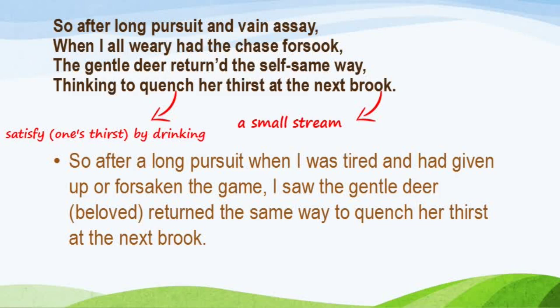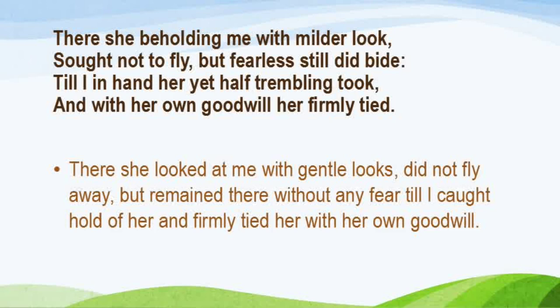In simple words: in the first quatrain the hunter — who is none other than Edmund Spenser — is very tired pursuing his beloved Elizabeth Boyle. After he sits for some time in a shady place and gives up the chase, the deer comes back near him in order to quench her thirst at the next small stream.